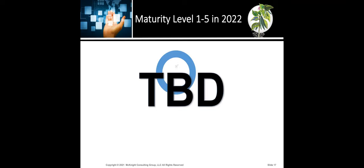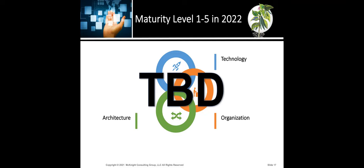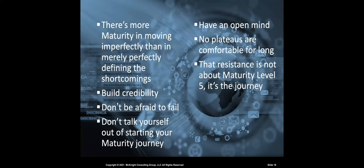So that was it for 2021. Hopefully you've been keeping score and know where you are across all four categories: Technology, Organization, Architecture, and Data Strategy. Hopefully you've also taken down some action items to move forward to the next level. Keep in mind as you get on your data maturity journey — it's more about moving forward than perfectly defeating the status quo. Build your credibility, don't be afraid to fail, don't talk yourself out of starting. Start mindfully, start with action, have an open mind. You may not have all the answers but be open to others who bring ideas aligned with moving data maturity up.